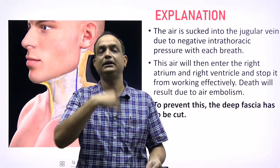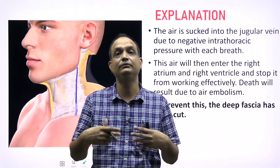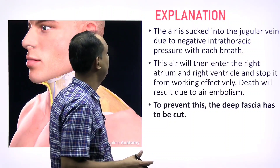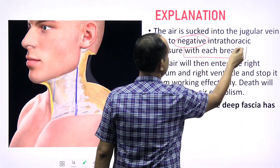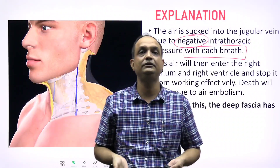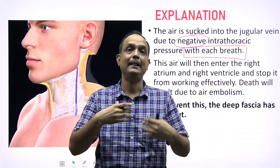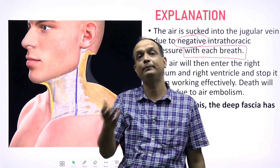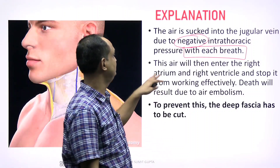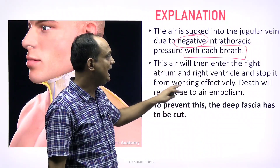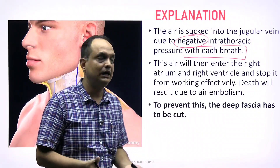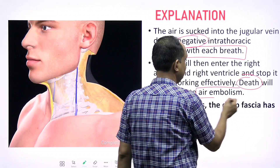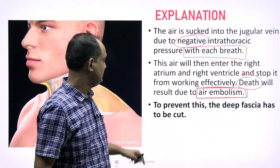Inspiration is driven by negative thoracic pressure. Whenever negative intrathoracic pressure exists, everything is sucked into the chest cavity — air, blood — which is why venous return is higher during inspiration. Air is sucked into the jugular vein with each breath due to negative intrathoracic pressure. This air enters the right side of the heart, leading to heart failure and death of the patient — ultimately, air embolism occurs.